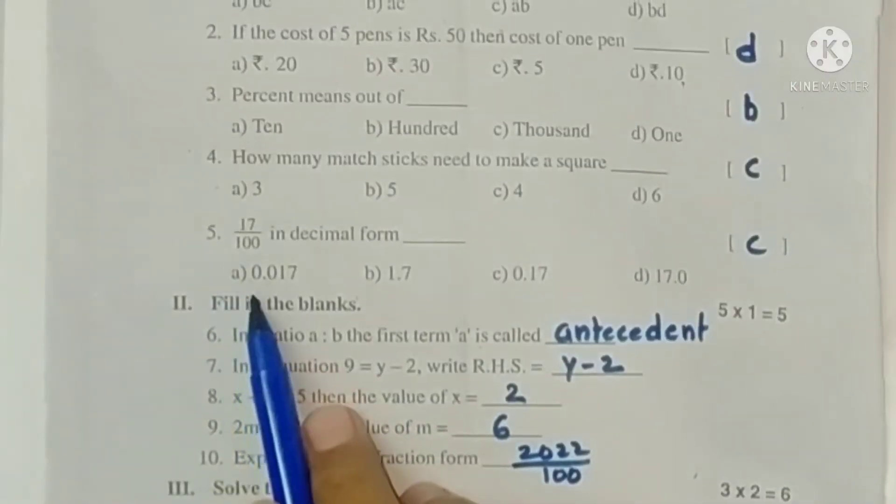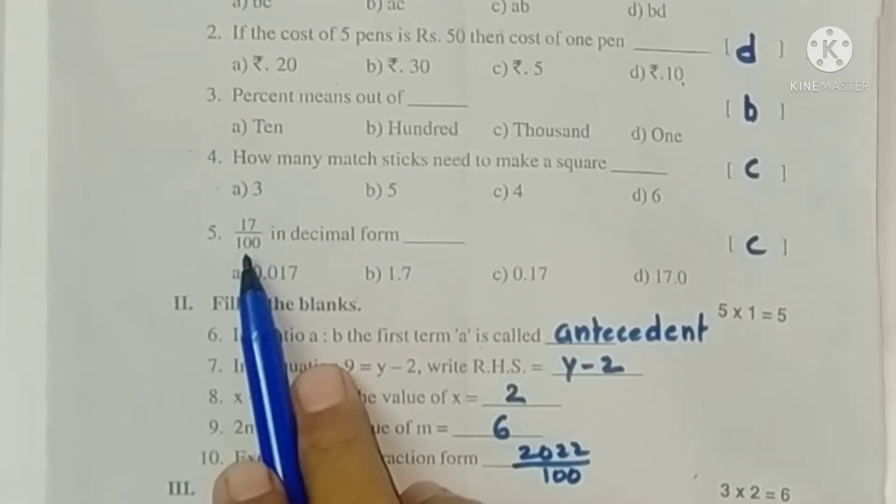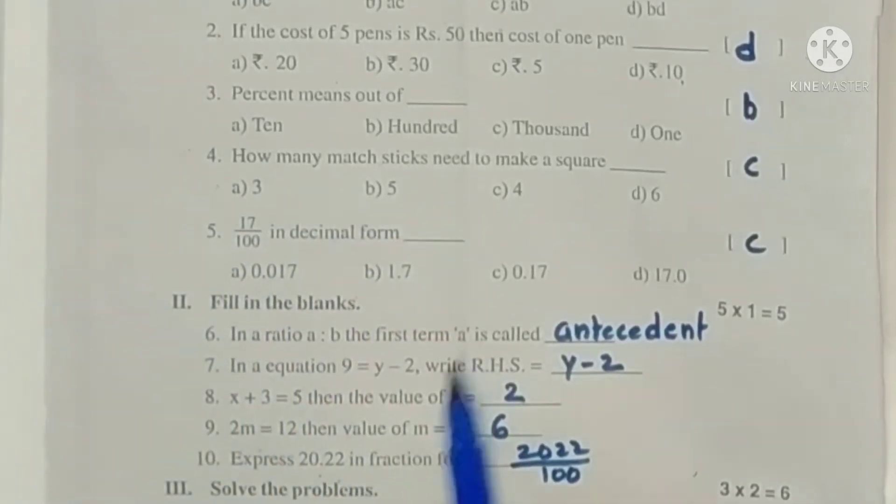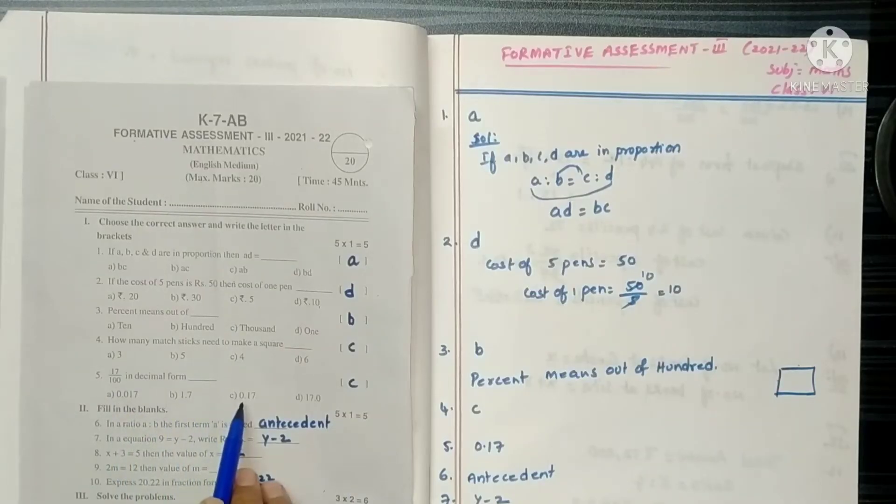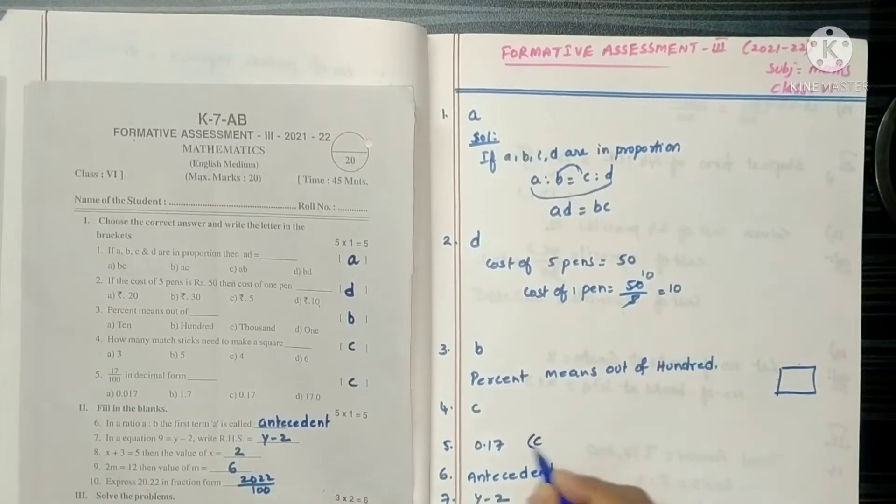Option C. 17 by 100. One after that we have 2 zeros. So decimal point after that we have 2 numbers. So it is 0.17, option C. So it is option C.